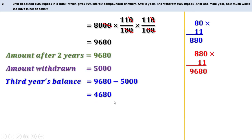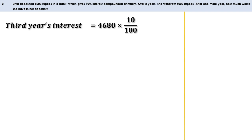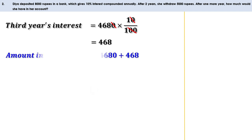Now she deposits 4,680 rupees for one more year at 10%. Third year's interest is 4,680 × 10/100 = 468 rupees. Third year's balance is 4,680 rupees, so the amount after that year is 4,680 + 468 = 5,148 rupees. After 3 years total, the amount in her account is 5,148 rupees.